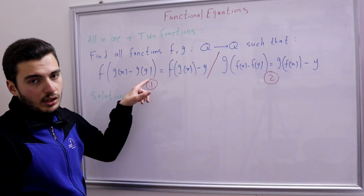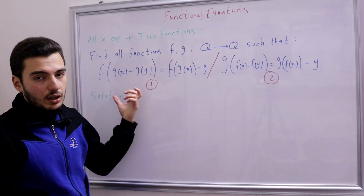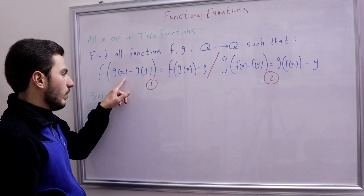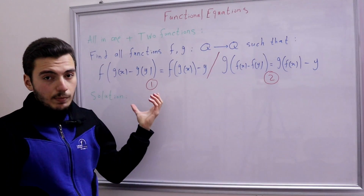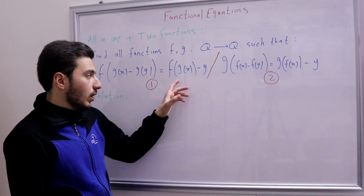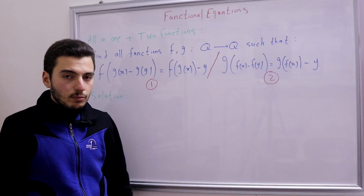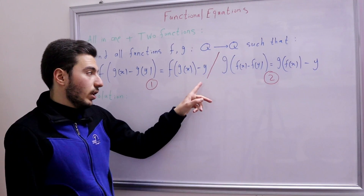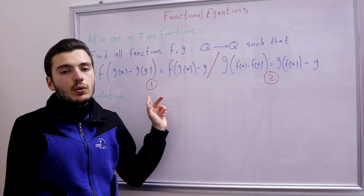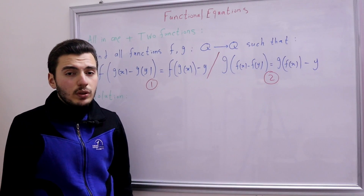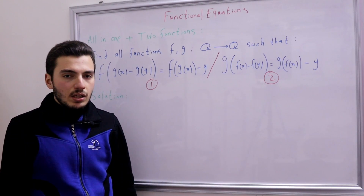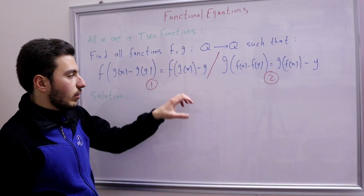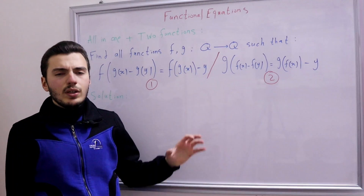We'll substitute P(x,x) — this way we can get rid of the ugly terms. With P(x,x) we get f(0) = f(g(x)) − x on the right-hand side, which means f(g(x)) = x + f(0). This is really useful, but we still need to know what f(0) itself is, so we need to do something else first.